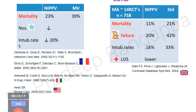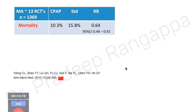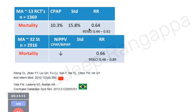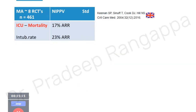In pulmonary edema, comparing pressure support with CPAP: CPAP was equally good — pressure support is not needed. When comparing NIV with mechanical ventilation in pulmonary edema, NIV was superior. In COPD, NIV versus standard: NIV significantly reduced mortality, intubation rates, and length of stay. A Chinese meta-analysis of 13 randomized controlled trials with 13,369 patients showed mortality with CPAP was significantly lower compared to standard (statistically significant). A Brazil meta-analysis of 32 studies (2009–16 patients) comparing NIV with standard also showed lower mortality.